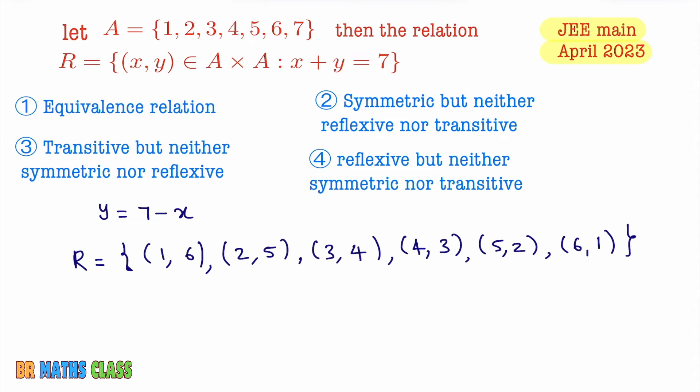Now for us it is very easy to check. Reflexive first we will check. Here 1 is there, but (1,1) is not there in this relation. So this relation is not reflexive. You observe the options. We can eliminate few options. It cannot be equivalence relation because we came to know that it is not reflexive. And you see here in fourth option they are saying it is reflexive, so it cannot be fourth option also. So our answer is either this or this.